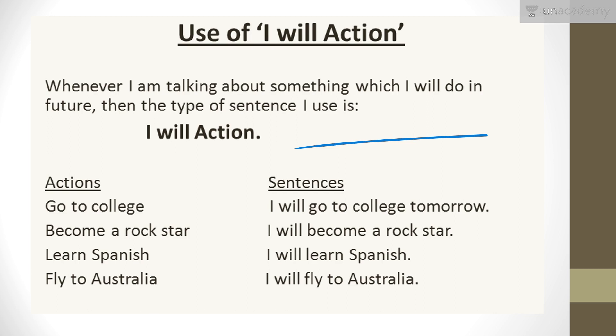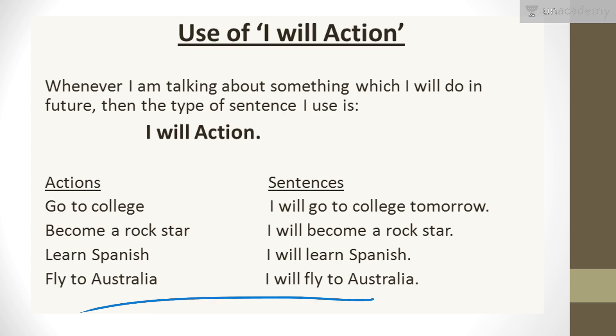For example: if the action is run, I would say 'I will run'. If the action is dance, I would say 'I will dance'. If the action is go to college, I would say 'I will go to college'. If the action is become a rock star, I would say 'I will become a rock star'. If the action is learn Spanish, I would say 'I will learn Spanish'. If the action is fly to Australia, I would say 'I will fly to Australia'. If the action is practice, I will say 'I will practice'.